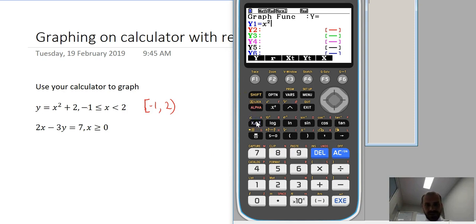x squared plus 2. And then use the comma button here. It doesn't recognize the curved bracket, so unfortunately we have to use the square brackets on both sides. Shift, the square bracket. Negative 1, 2.